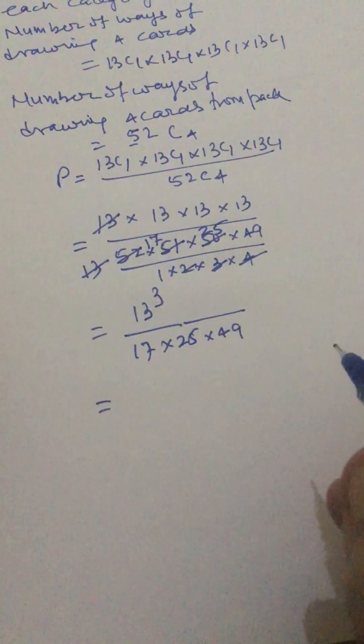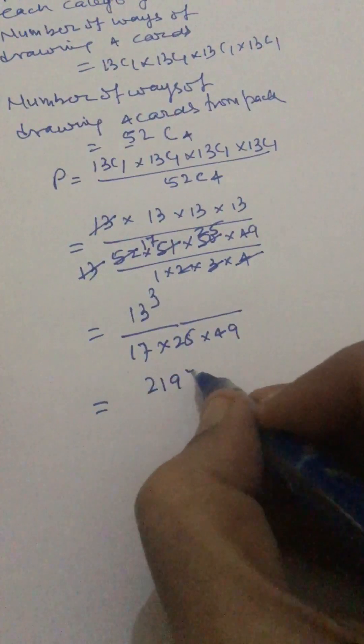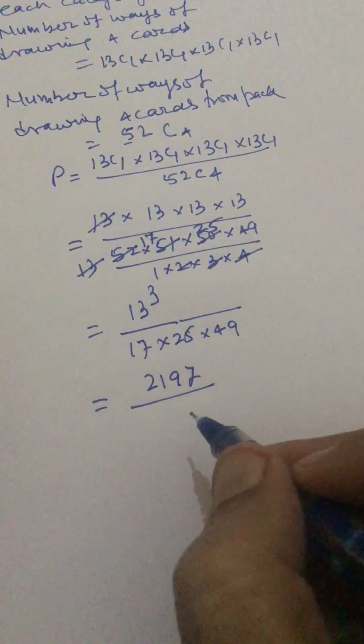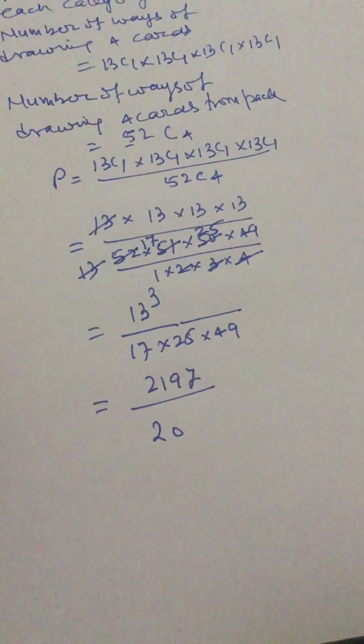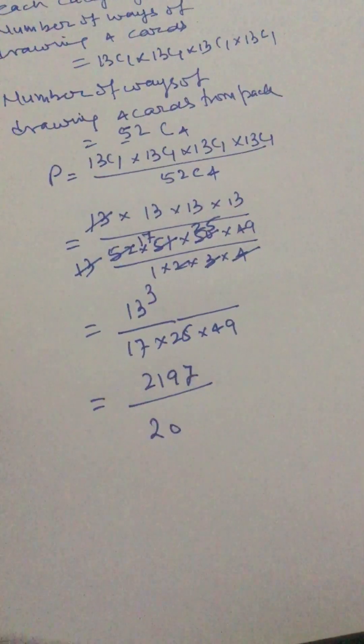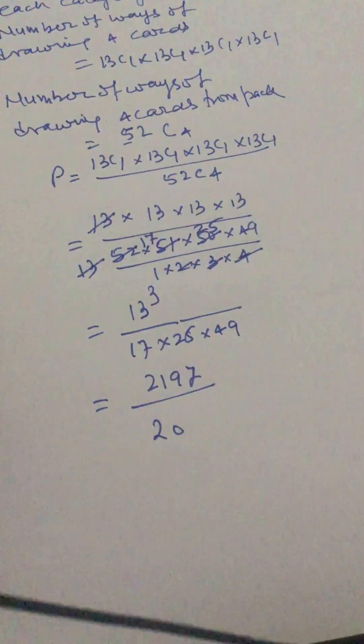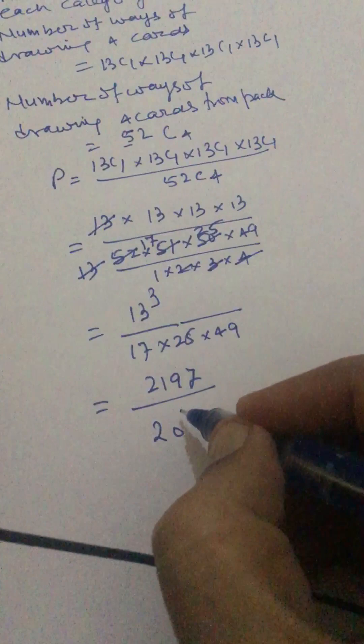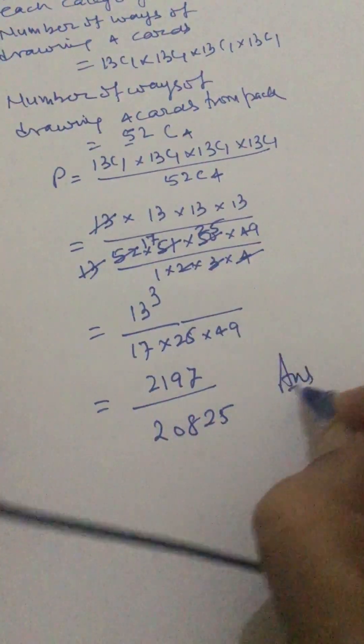This gives 2197 divided by 20825. And this is our answer, dear friends. This is how we can solve this probability.